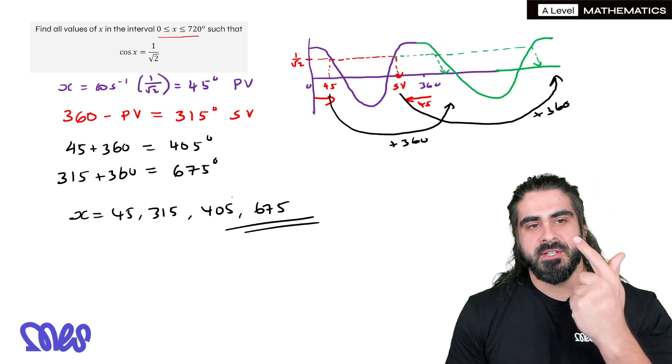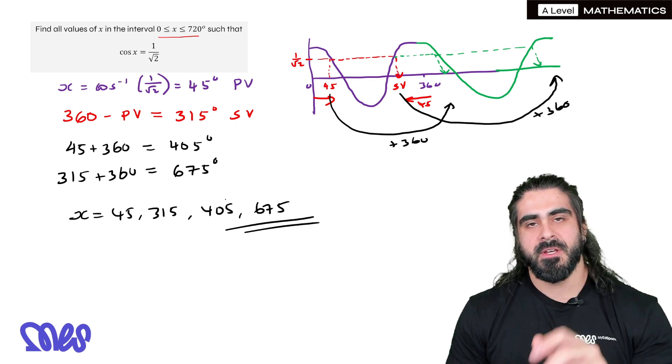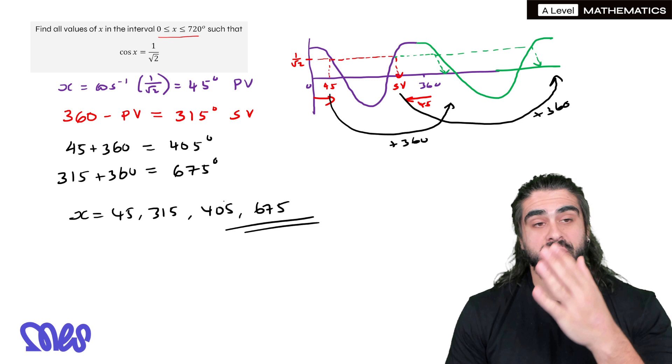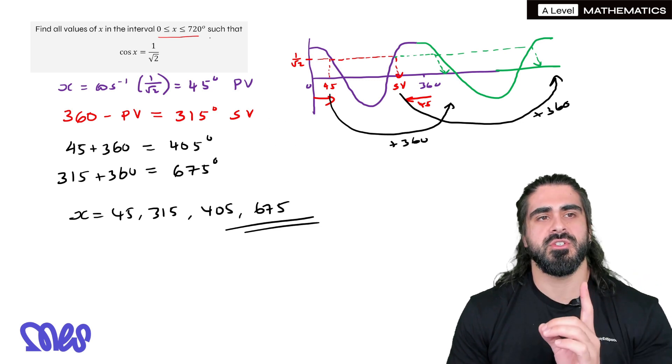So in a nutshell, we find the primary and secondary value for all of sine, cos, and tan. It doesn't change. Then we add, and you could actually minus 360 as well to find other values in the range. It just depends on what the range is.